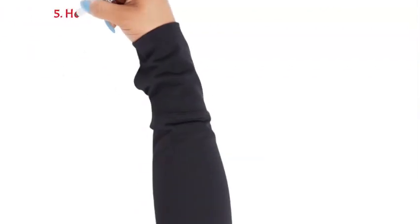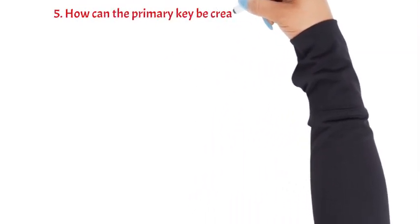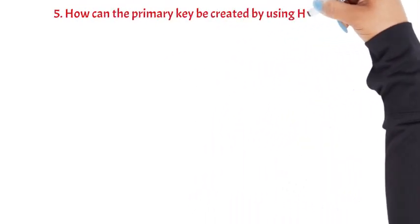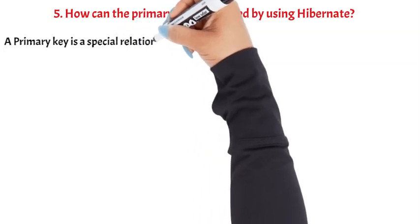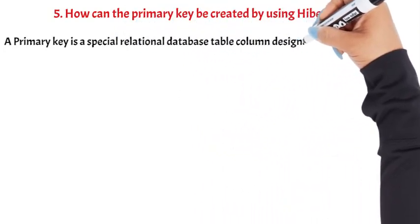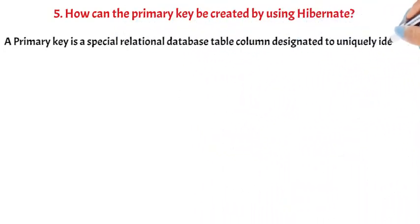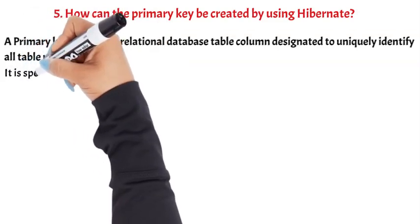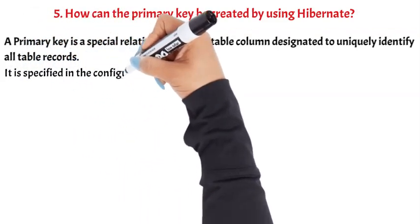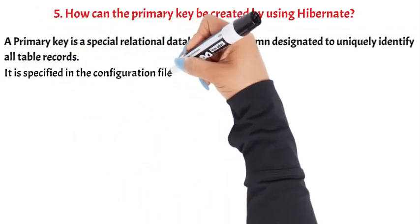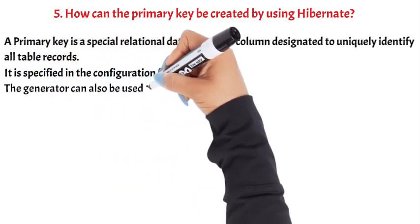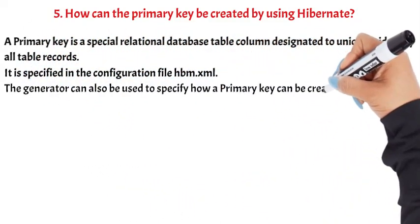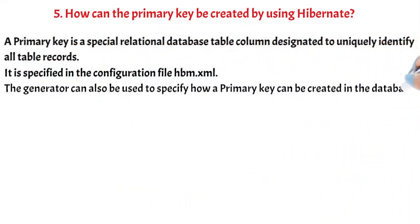Question 5: How can the primary key be created using Hibernate? A primary key is a special relational database table column designated to uniquely identify all table records. It is specified in the configuration file HBM XML. The generator can also be used to specify how a primary key can be created in the database.